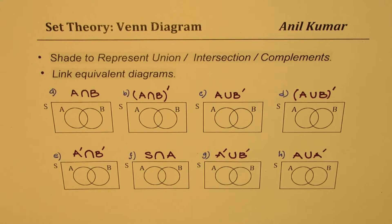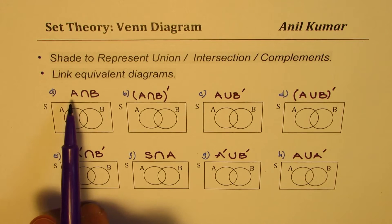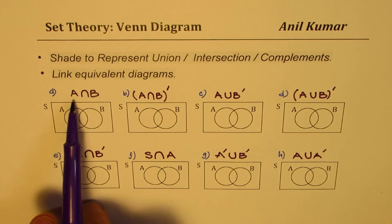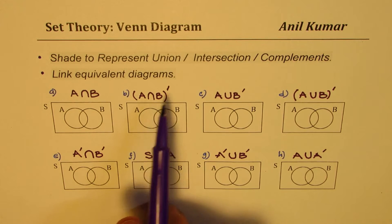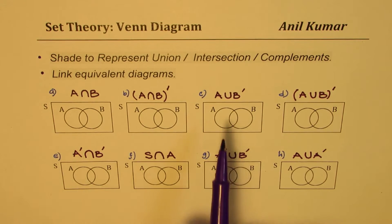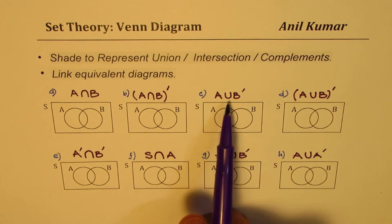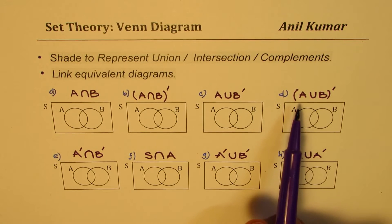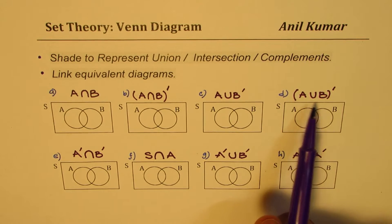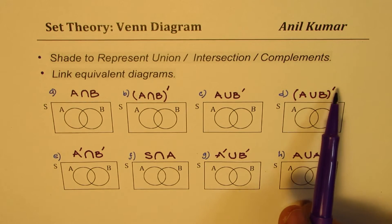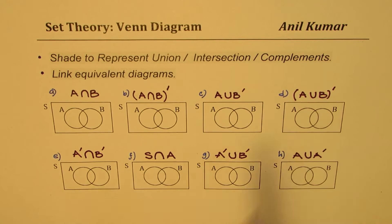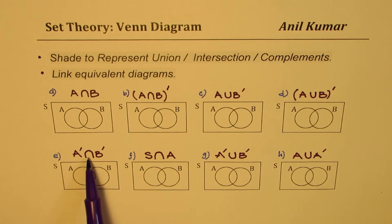Some of you can actually pause the video, copy this particular question, and shade the required regions. What you need to shade is written here. For A it is A∩B, then complement of A∩B, C is A∪B', D is complement of union A and B, and E is intersection of complements of A and B.